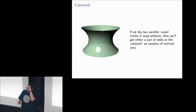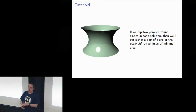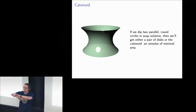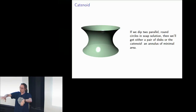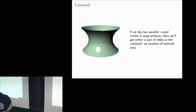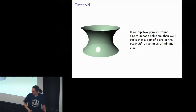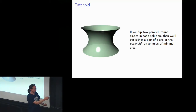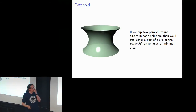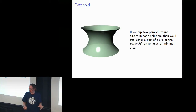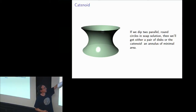Why is a minimal surface saddle-shaped? A minimal surface wants to be more negatively curved than the space it's in. There are three kinds of geometry: positive curvature like a sphere, zero curvature which is flat, and negative curvature which is saddle-shaped. We're in R³ which is flat, so a minimal surface tries to be negatively curved. It doesn't do a perfect job though — it still gets a little flat near the boundary.